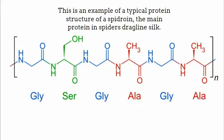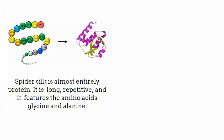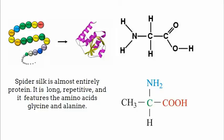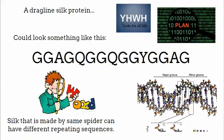This is an example of a typical protein structure of a spidroin, the main protein in spider's dragline silk. Spider silk is almost entirely protein — it is long, repetitive, and features the amino acids glycine and alanine. A dragline silk protein could look something like this. Silk made by the same spider can have different repeating sequences.